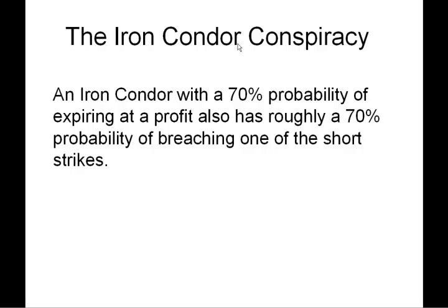Once we start adjusting, we can't assume we're going to keep that original probability. A lot of people put on a 70% probability iron condor, wake up the next morning, the market's moved a little bit — not hitting their short strikes — but it shows only a 50% probability now. As the market moves, the probabilities change. A lot of these trades are thought of as market neutral; however, they're very dependent on direction.